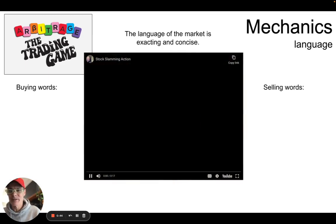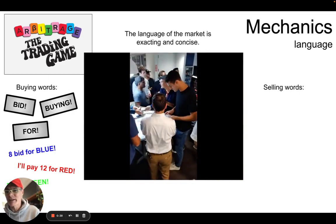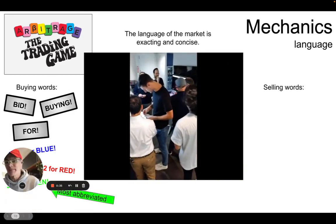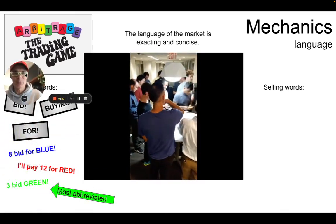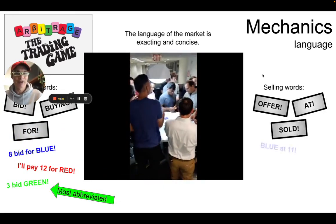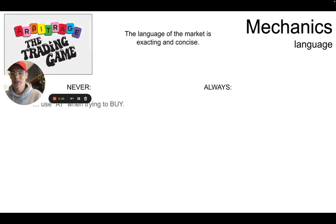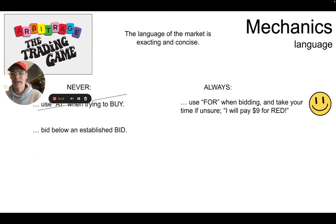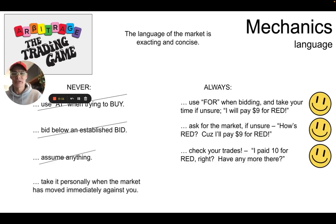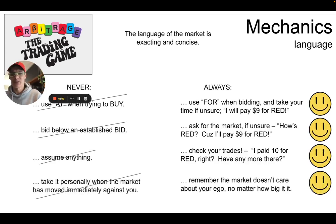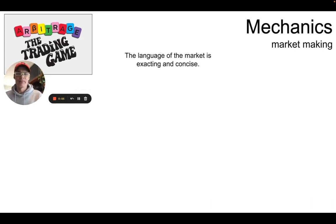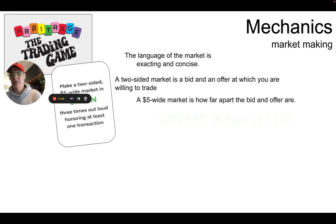So the language of markets is precise. Flying words — bid for blue, I'll pay 10 for red — and there's the most abbreviated way to say it. We begin with recent green. And here are some selling words: offer at, sold blue at 11, red offer to 13, and sold — selling green at three. These are some nevers: never use 'at' when bidding, never bid below an established bid, ask for the market, don't assume anything, check your trades, and never take it personally when the market moves against you. These broker cards tell you what to do, but I'm out of time.